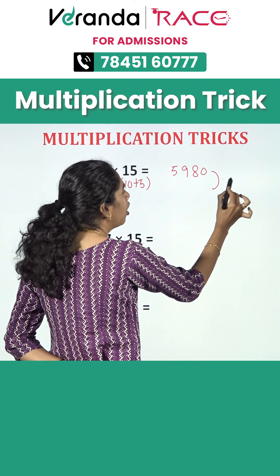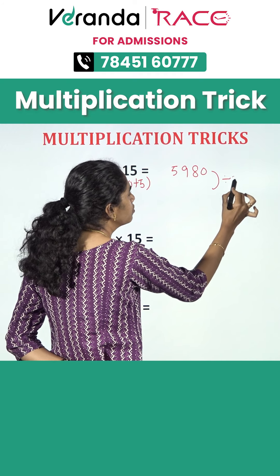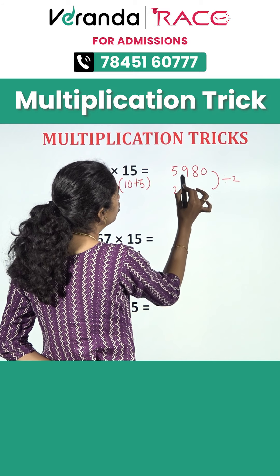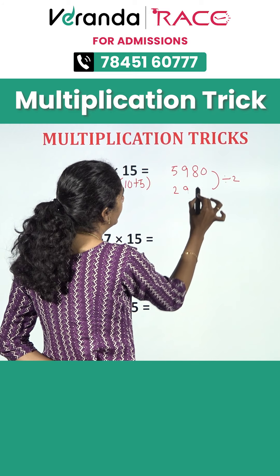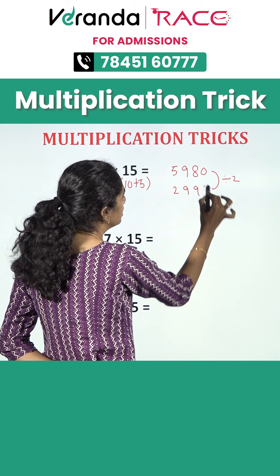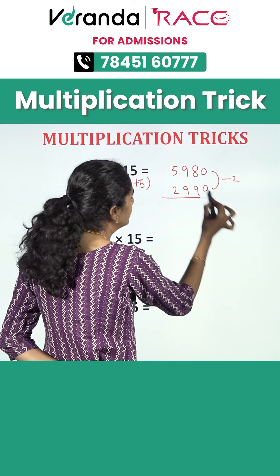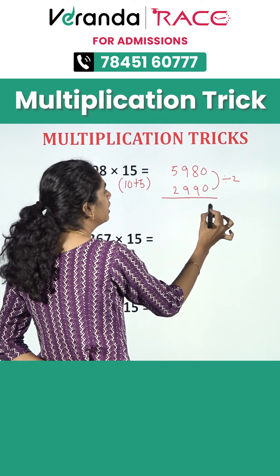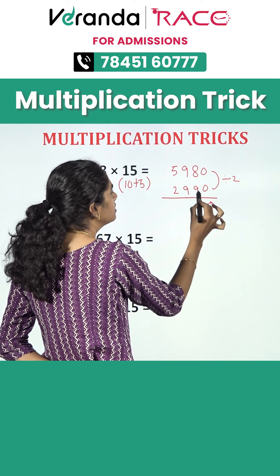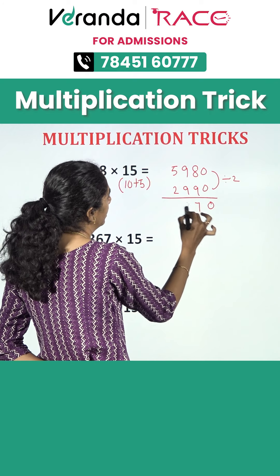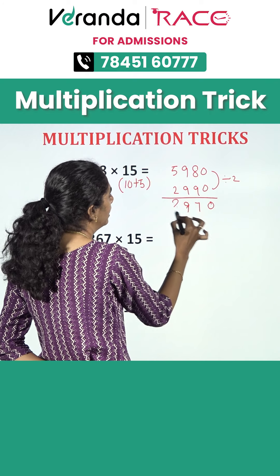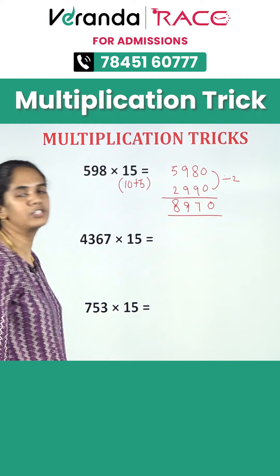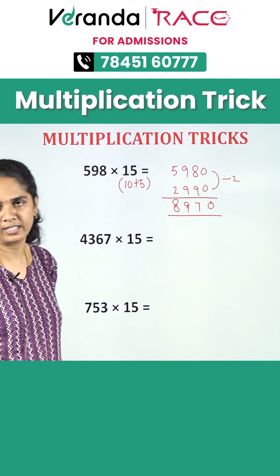Next, take half of this value. Half of this value will become 2990. Next, we need to add these two. You will get 0, 7, 9 and 8. So, 8970 is our answer.